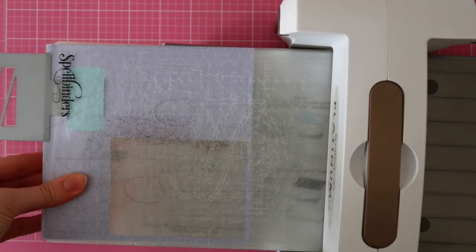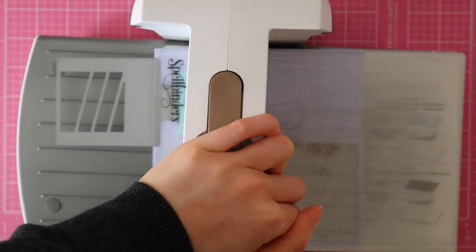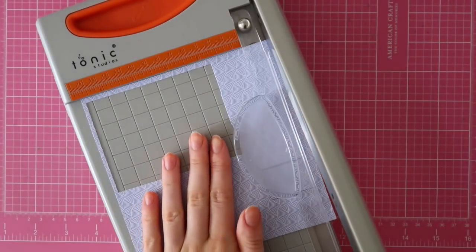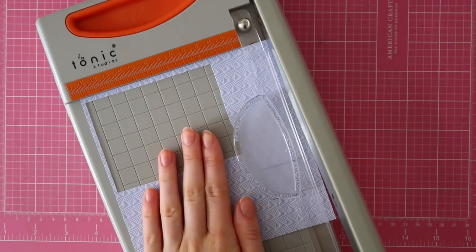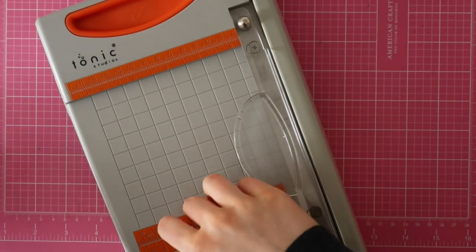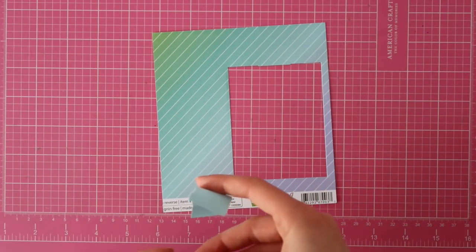I wanted to decorate the little tab that you pull out, so I did some partial die cutting. As you can see, I just lined up that die with the edge of my cutting mat so I didn't have to waste any pattern paper. Then I'm using my Tonic guillotine to trim that down, and then it will be the perfect size to cover up the little thing that you pull out.